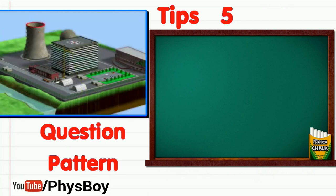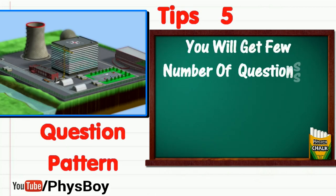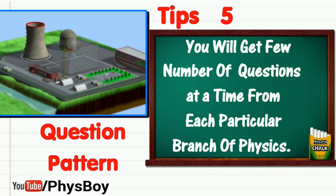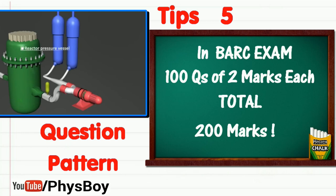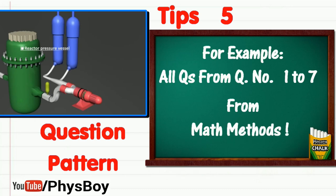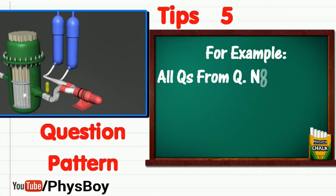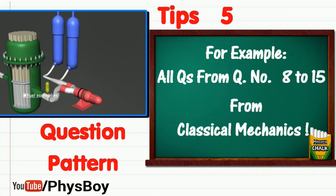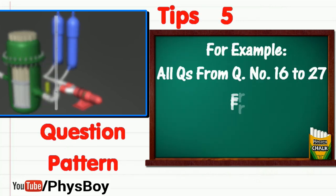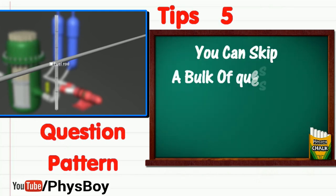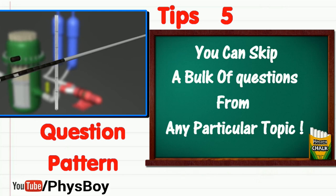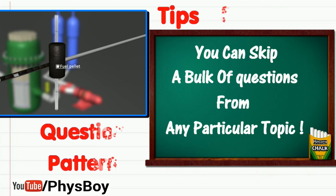Tip number five: question pattern. Questions are generally arranged in a very organized way. You will receive a bulk of questions at a time from each subject of physics. For example, questions 1 to 7 may come from mathematical methods, then questions 8 to 15 from classical mechanics, then 16 to 27 from quantum mechanics, and so on. The number of questions differs per topic. If you are not strong in a particular branch, such as electronics, when you encounter the first electronics question you can recognize the upcoming bulk and skip the entire electronics section, moving to the next topic.